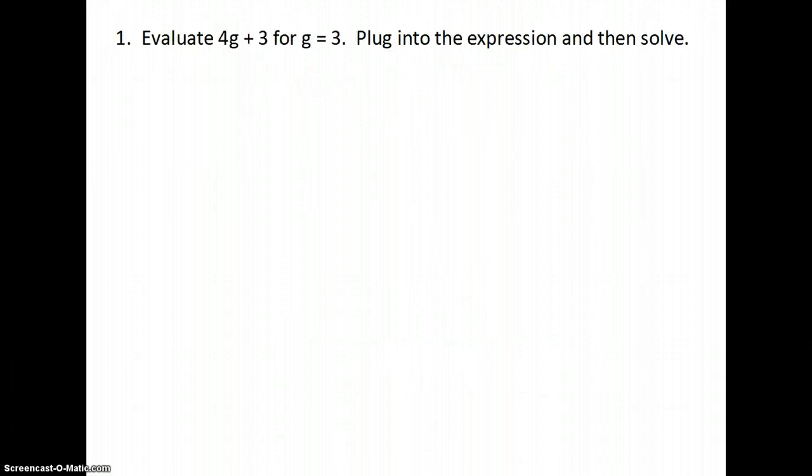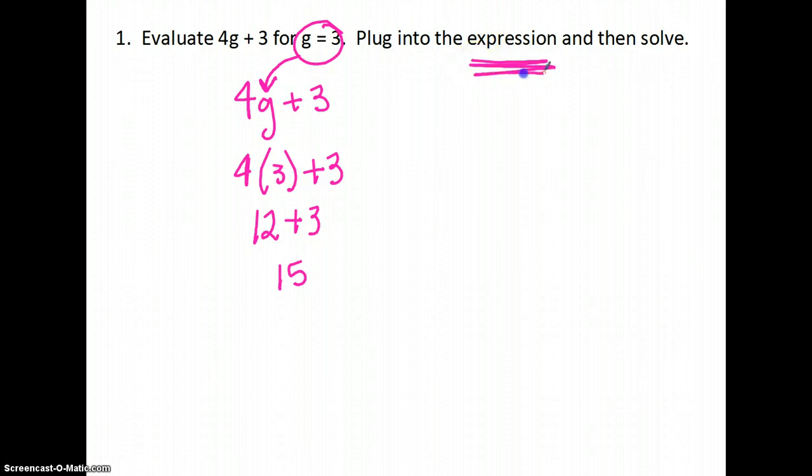The first one says evaluate 4g + 3 for g = 3. Plug it into the expression and then solve. So I'm going to write my original problem, 4g + 3, g = 3, so I'm going to plug it in. Then 4 times 3 plus 3 is my new expression. Using my order of operations, I do multiplication first, which is 4 times 3 is 12, plus 3. 12 plus 3 is 15. No equal signs in expressions.